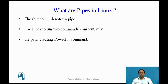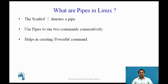Next we will see what pipes are in Linux. The pipe symbol is a straight vertical line '|'. Pipes are used to run two commands consecutively. The pipe command in Linux lets you use two or more commands such that the output of one command serves as the input to the next. In short, the output of each process is directly used as input to the next one, like a pipeline. The pipe helps you combine two or more commands at the same time and run them consecutively, allowing you to perform complex tasks quickly.